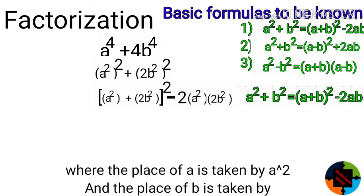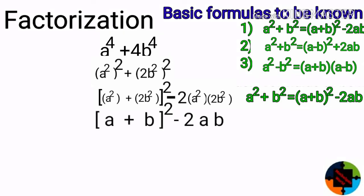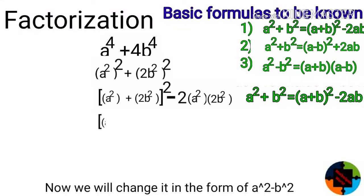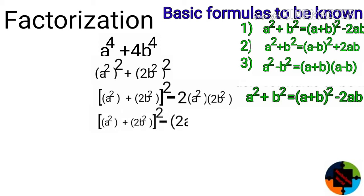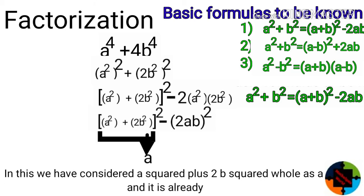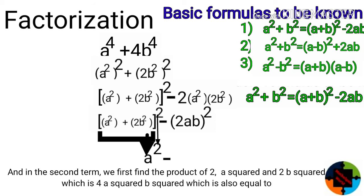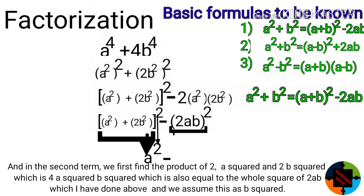Now we will change it into the form of a squared minus b squared. We have a squared plus 2b squared whole squared minus 2ab squared. Here we consider a squared plus 2b squared whole as a, which is already squared. In the second term, the product of 2a squared and 2b squared gives 4a squared b squared, which equals the whole square of 2ab. We assume this as b squared.